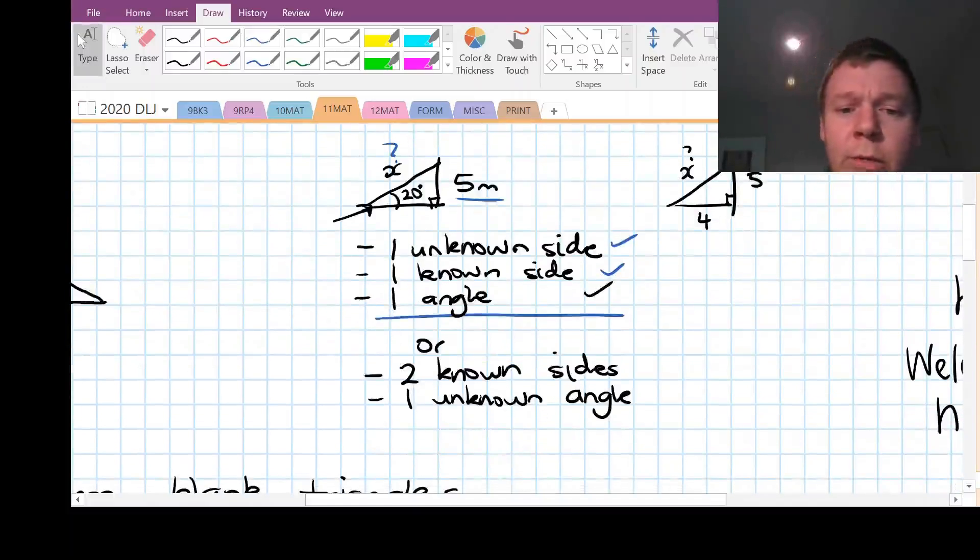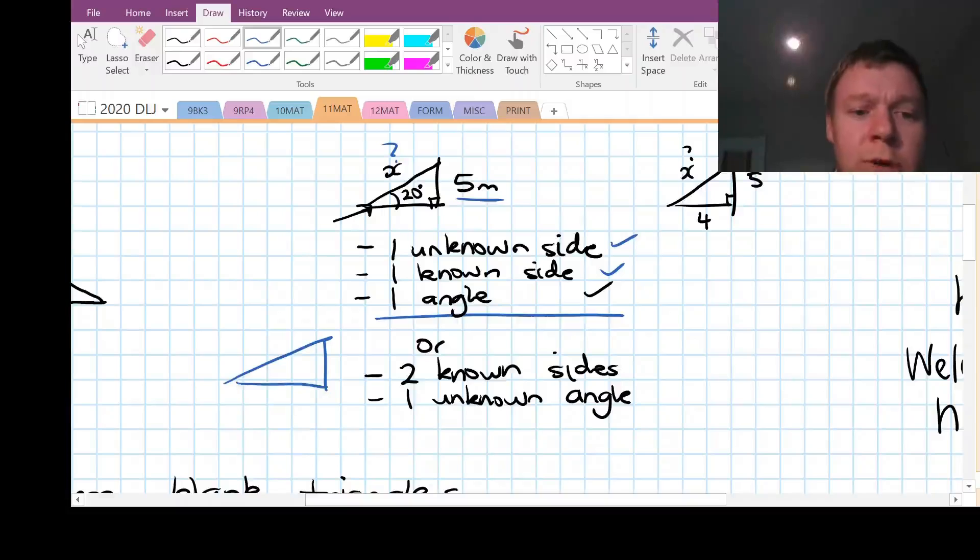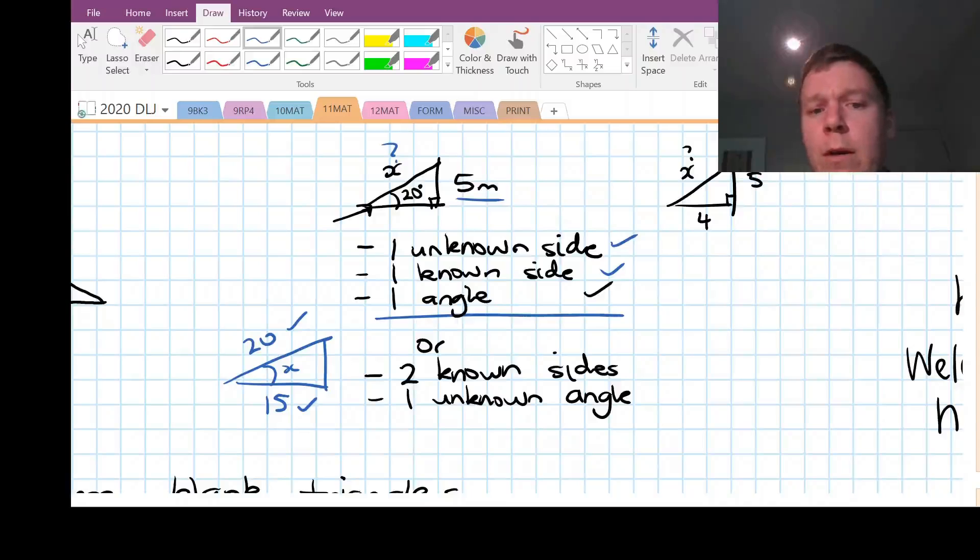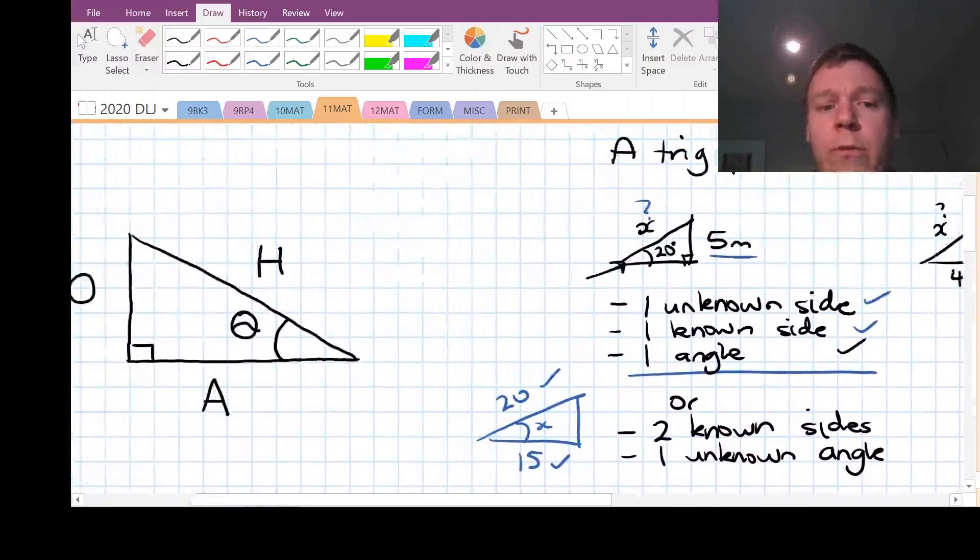Well actually there's an alternative where you know two sides and the angle is unknown. So you can also use trigonometry if you want to know what the angle x is, and you've got a known side of 20 on this side, and a known side of 15 on this side. You could use those two values to work out the angle. So that's what we use trigonometry for.